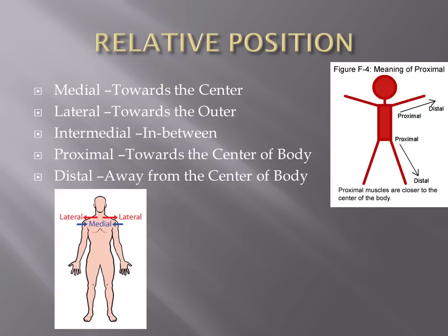Let's talk about relative position. Medial means in toward the middle of the body. Lateral means toward the outside. We're talking about different parts of the body in relation to each other. For example, the sternum is medial to the shoulders — it's closer to the midline. The shoulders are lateral to the sternum. My ears are lateral to my eyes, meaning farther from the center. My eyes are medial to my ears.